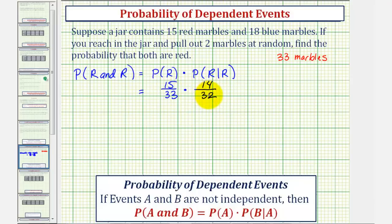This product would be our desired probability. Let's simplify these fractions before multiplying. Notice how 15 and 33 share a common factor of three. There's five threes in 15, 11 threes in 33. 14 and 32 share a common factor of two. There are seven twos in 14 and 16 twos in 32. So our product is five elevenths times seven sixteenths, which would be 35 divided by 176.